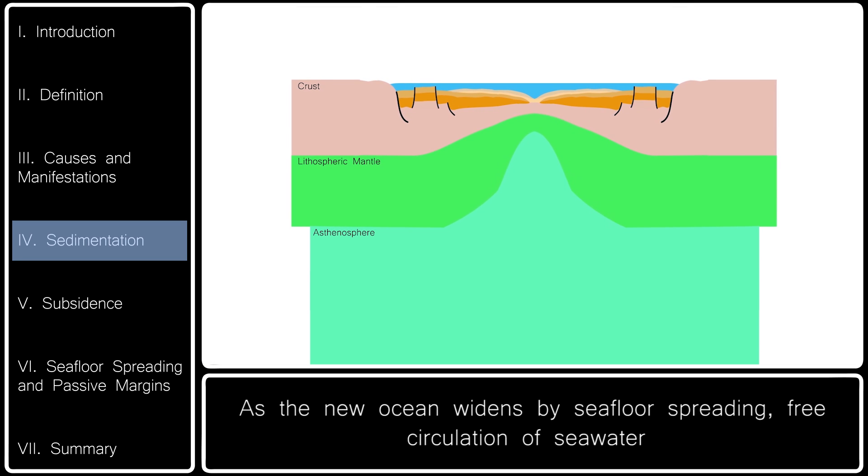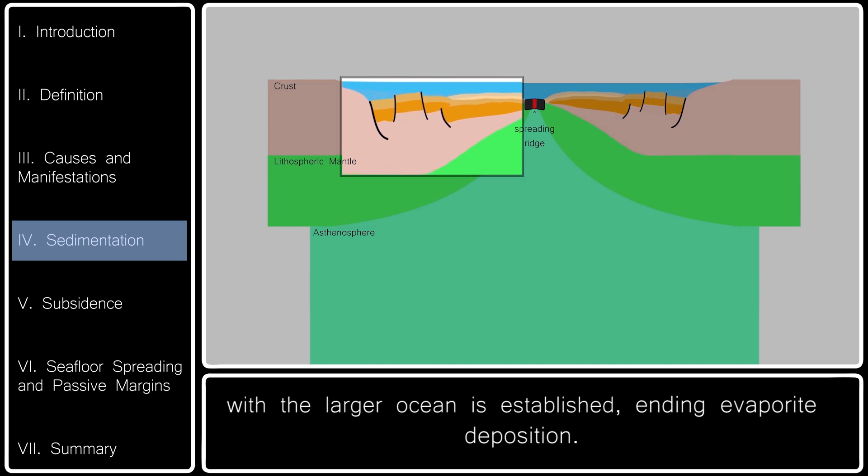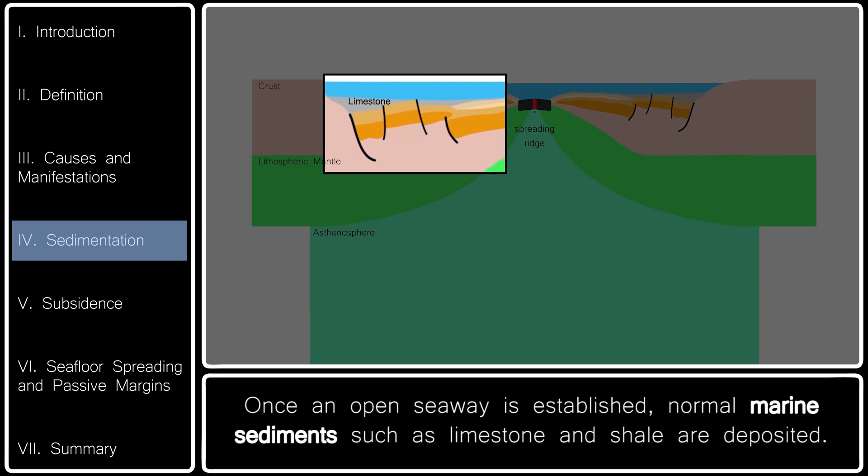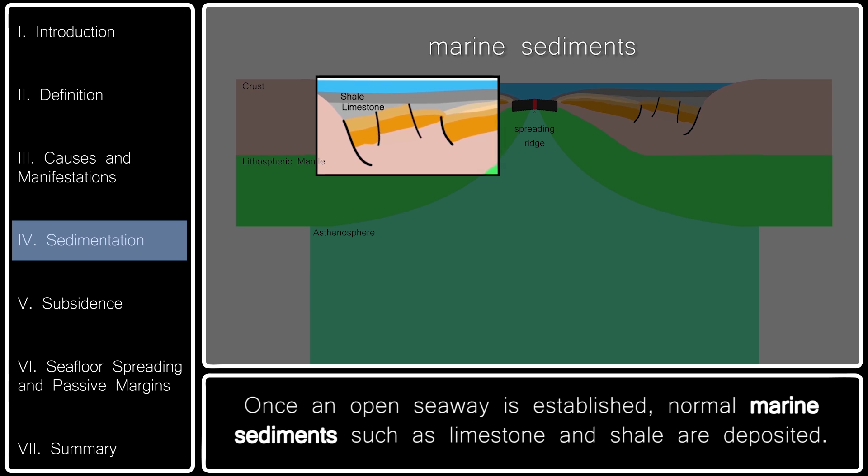As the new ocean widens by seafloor spreading, free circulation of seawater with the larger ocean is established, ending evaporite deposition. Once an open seaway is established, normal marine sediments such as limestone and shale are deposited.